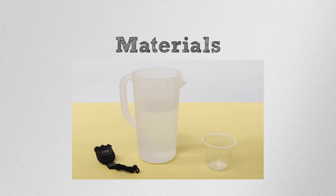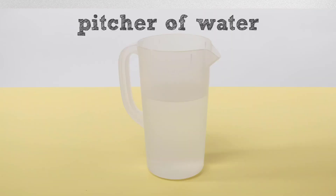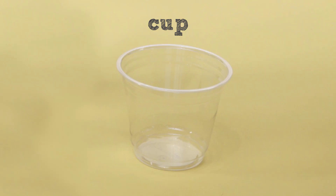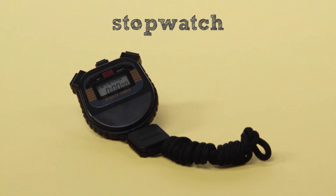In this activity, you'll observe how different surfaces around your school or neighborhood soak up water. You'll be describing the way each surface looks, feels, and whether they soak up water. To observe how these surfaces soak up water, you'll use a pitcher of water, a cup, and a stopwatch.